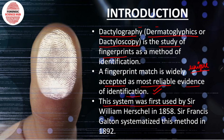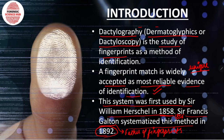This system was first used by Sir William Herschel in 1856 — note that some books mention 1858, so mark according to the option available in the exam. Sir Francis Galton then systemized the method in 1892. Galton is also known as the father of fingerprints, and in 1892 he wrote a book called 'Fingerprints'.